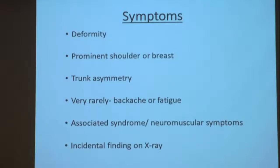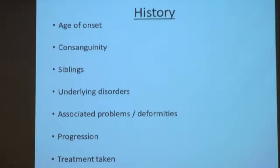Are there any other conditions which can lead to scoliosis? The commonest systemic association is neurofibromatosis. There are lots of things you need to see on the x-ray to find out the etiology. The x-ray findings can give you clues regarding the type of scoliosis.